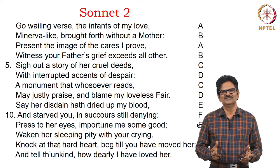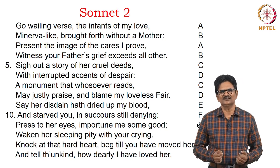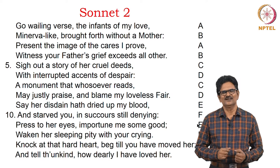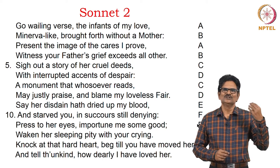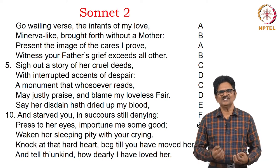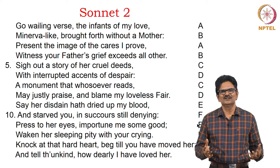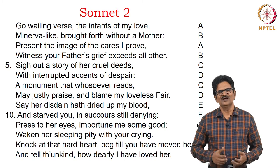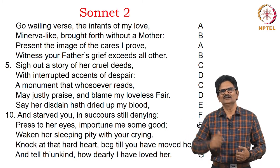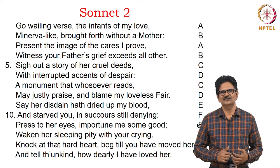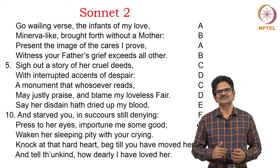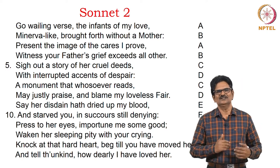Here is a poem from a poet who imagines himself as the father of his own verses and tells his verses to go to his lady love, to request her to have pity on the father, so that he could become energetic, alive, and write more poems for the lady. We see the rhyming scheme here — ABAB and the like. We will look at the rhyme scheme a little later.